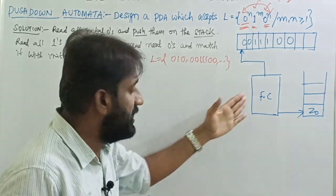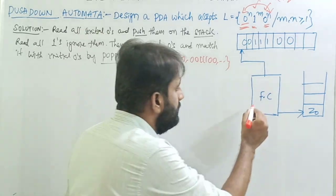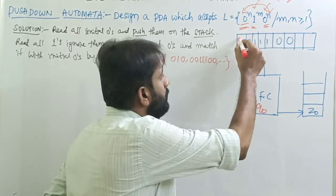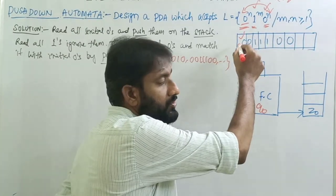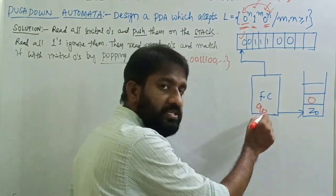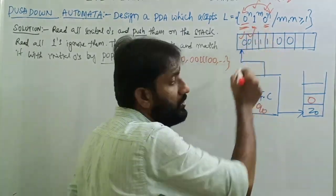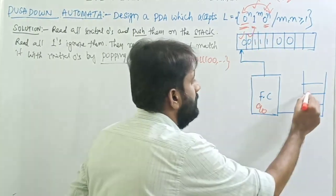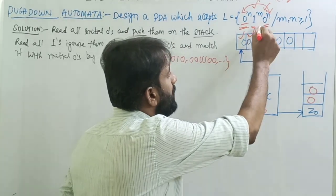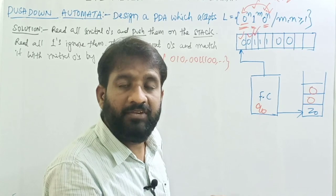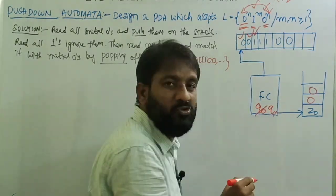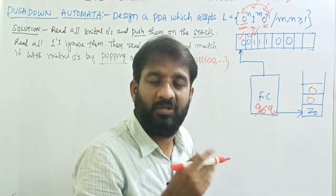Let me explain this logic through the diagram. At state q0, the initial input symbol is 0 — read the 0 and push it onto the stack. Remain on the same state, read the next 0 and push it onto the stack. When the next input symbol is 1, move from state q0 to q1.